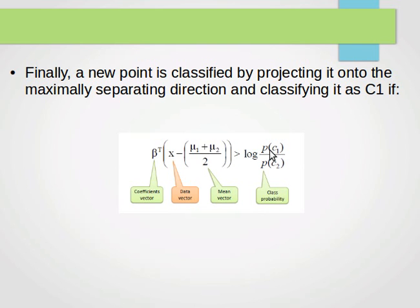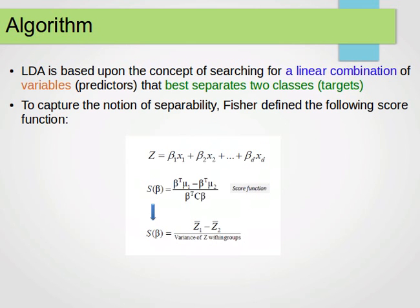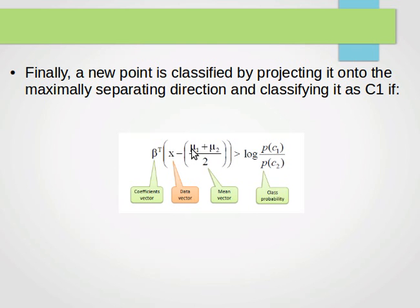Probability of class 1 and class 2 can be found using counts. For example, if I have data with 100 instances, 40 of them belong to first class, 60 of them belong to the second class, then the probability of class 1, C1, is 40 over 100, which is 0.4. The probability of the second class is 60 over 100, which is 0.6. We have our coefficients vector, beta transpose times x, which is a vector of our data, of our variables. x minus mu1 plus mu2 over 2, and this is the mean vector. You just plug these values in and find whether the new point belongs to class 1 or class 2.